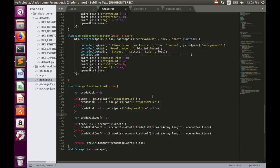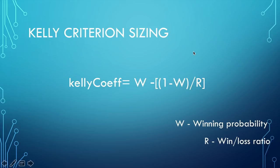Kelly Criterion implementation is a little bit more difficult because it relies on historical performance, which we have not measured yet. Let's look again at the Kelly Criterion formula. It requires two input parameters: the first one is winning probability, which is the ratio between profitable trades and losing trades for each pair. And of course, win-loss ratio, which is the ratio between average profit and average loss, again for every pair.